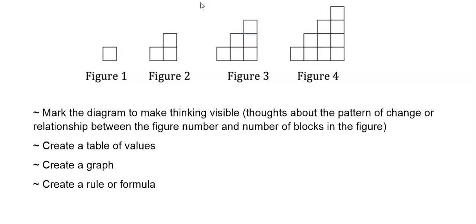In this video, we're going to start by looking at these figures closely. We're going to mark the diagram to make our thinking visible — our thoughts about the pattern of change, or the relationship between the figure number and the number of blocks in the figure. We'll look at a table and graph and create both a recursive rule and an explicit rule. We'll also look at this pattern of change to identify what type of function should be used to model this data.